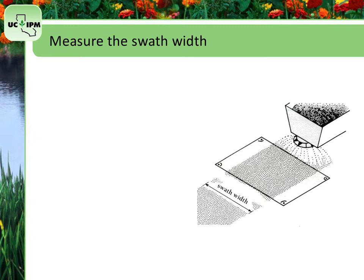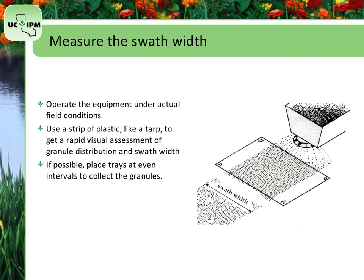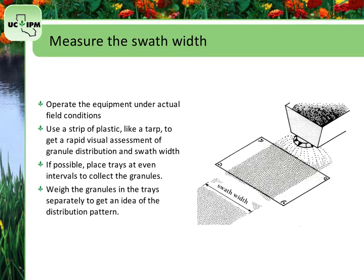To find the swath width, operate the equipment under actual field conditions. You can use a strip of plastic such as a tarp that contrasts with the color of the granules. This gives you a rapid visual assessment of granule distribution and swath width. If possible, you can place trays or other containers at even intervals across the application swath to collect the granules. Weigh the granules in the trays separately to get an idea of the distribution pattern.